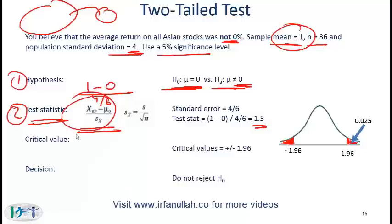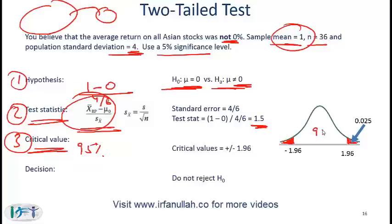The test statistic equals 1.5. Step 3 is the critical value, which is based on 95% confidence. Looking at the z-table with 95% in the middle, the remaining 5% is split between two tails, so each tail has 0.025. Therefore the critical value is plus or minus 1.96.